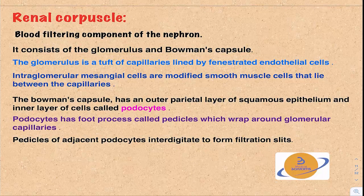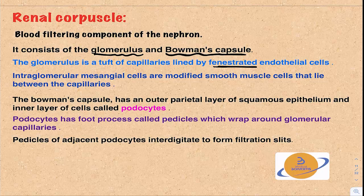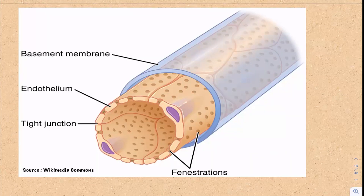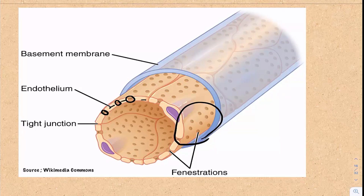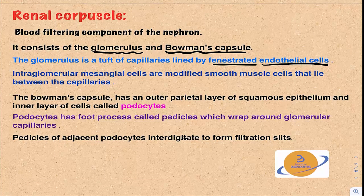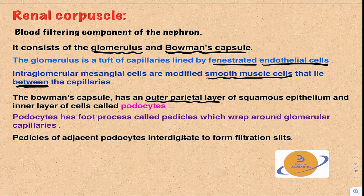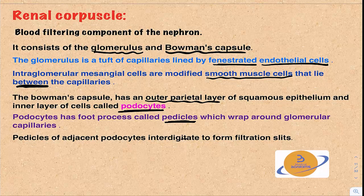The renal corpuscle is the blood-filtering component of the nephron. It consists of the glomerulus and the Bowman's capsule. The glomerulus is a tuft of capillaries lined by fenestrated endothelial cells — the fenestrations allow passage of filtrate from the blood. Intraglomerular mesangial cells are modified smooth muscle cells that lie between the capillaries. The Bowman's capsule has an outer parietal layer of squamous epithelium and an inner layer of podocytes, whose foot processes called pedicles wrap around the glomerular capillaries to form filtration slits.